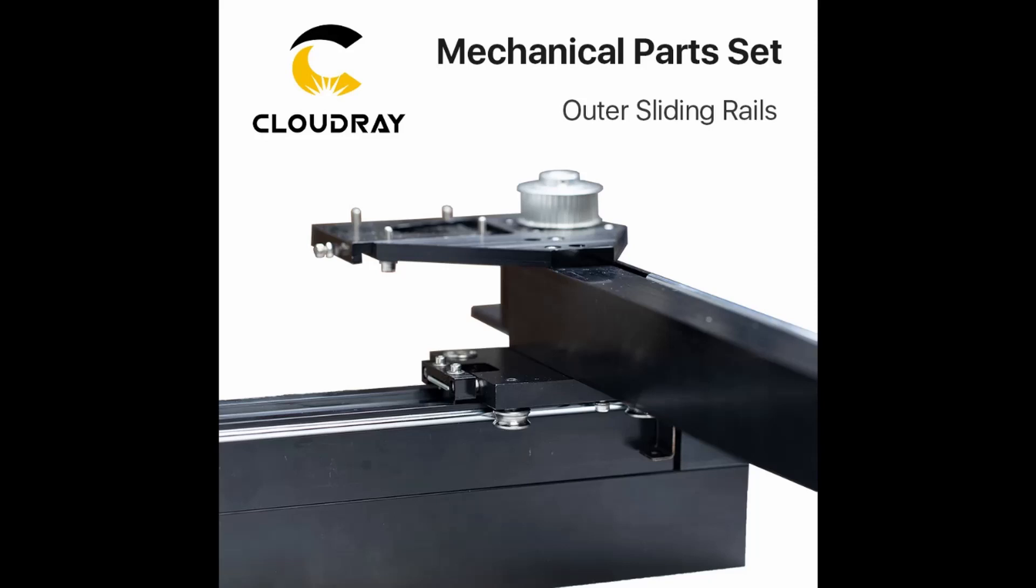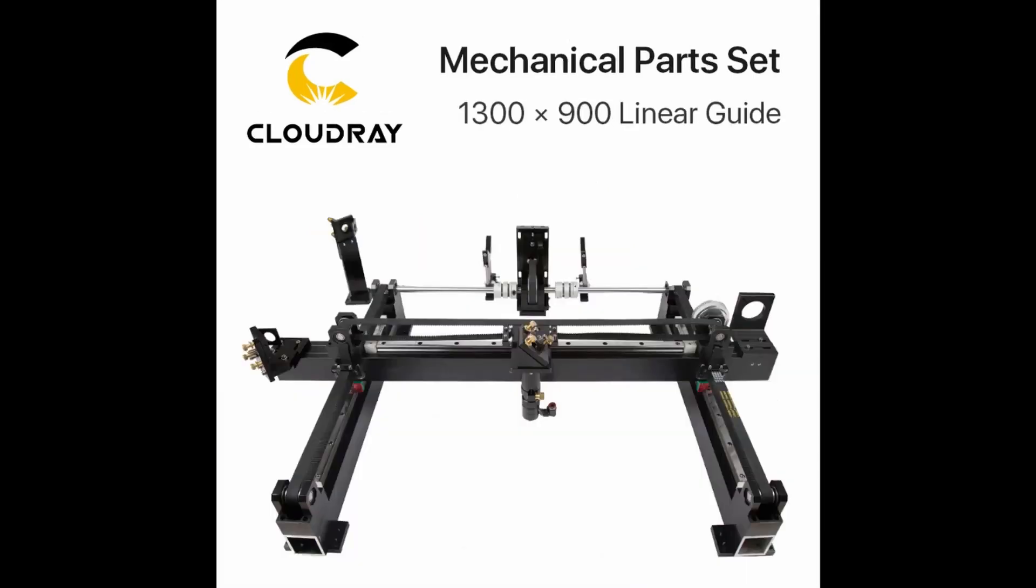There are three main types of rails that you can use for your laser machine for the x and y axis and these are the inner sliding rails, outer sliding rails and linear rails.